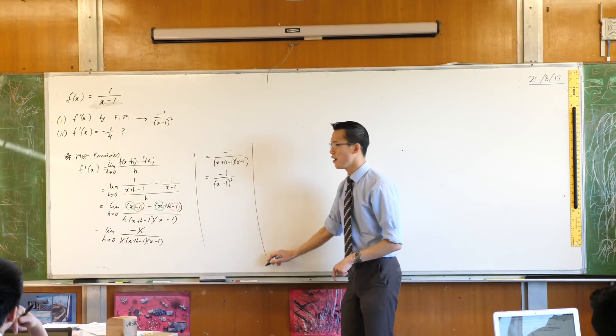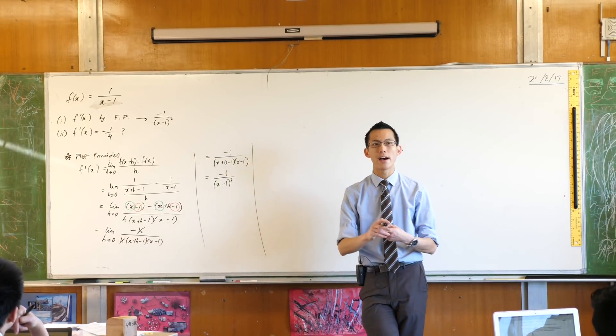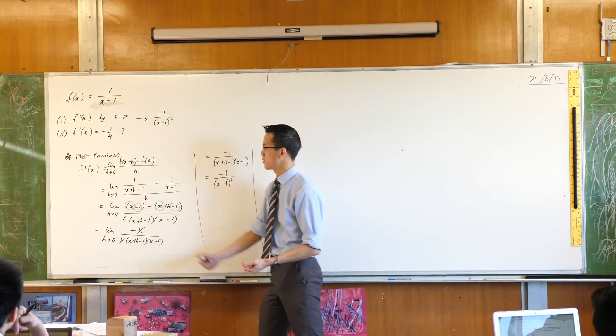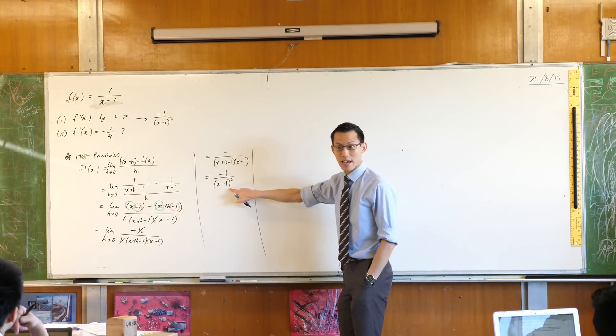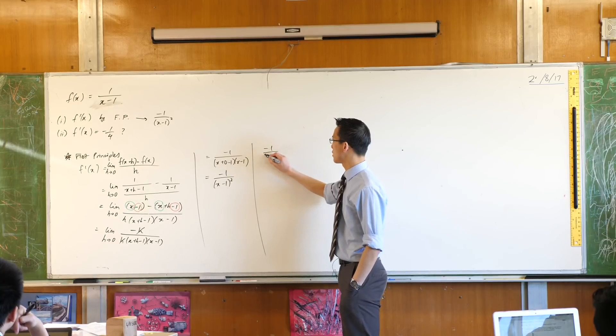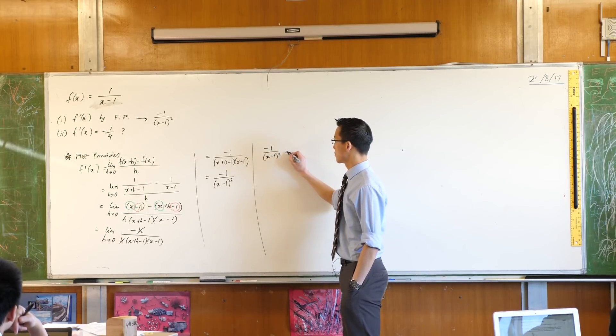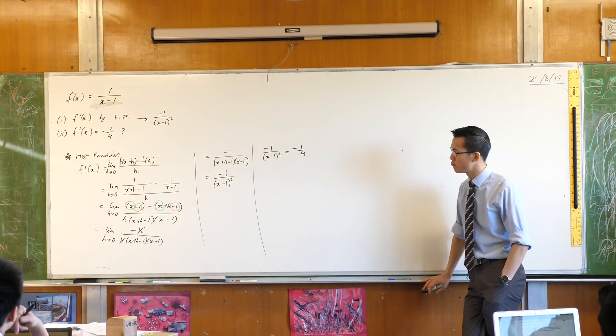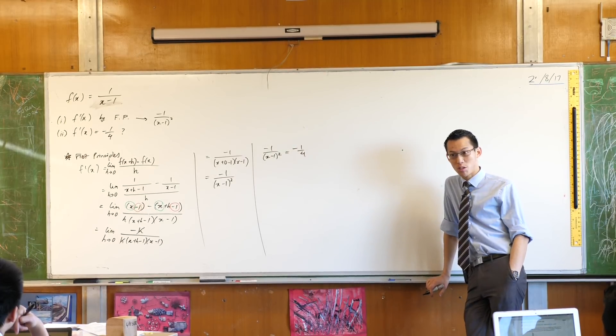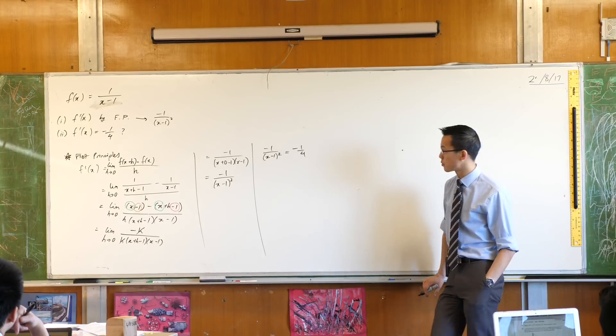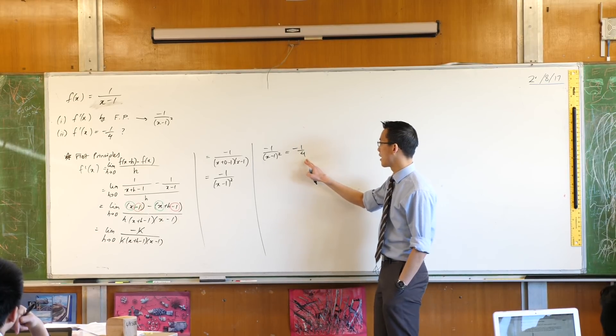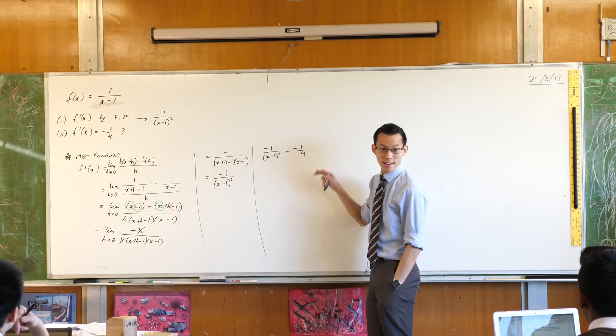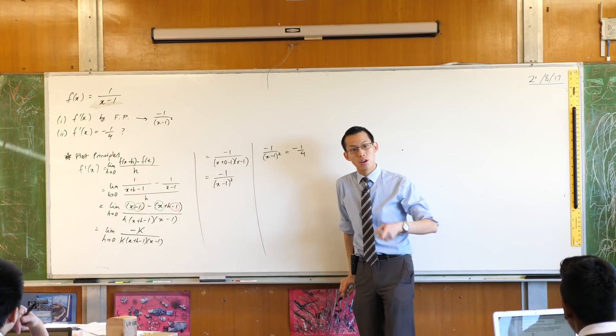So just to finish out, part 2 says, correct if I'm wrong, find the values of x when this is the case. Find the values of x. So this is f dash x. So I'm solving this equation. So someone want to help me out? What could I do to simplify both sides? I could cross multiply. That would work. You're going to get negative 4 over here and you're going to get negative x minus 1 all squared over there.